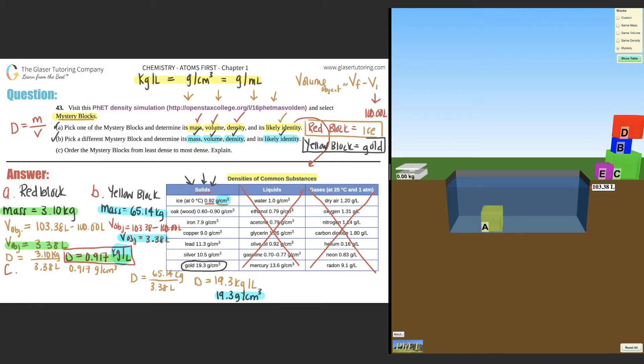Now we just have to order the mystery blocks from least dense to most dense. So I'll put that where C is here. We want least dense, all the way to most dense. So we can do that little trick by seeing which ones float and which ones sink. The ones that float will always be less dense than the ones that sink. Float will always be less dense than the ones that sink. So less dense, more dense. D stands for density.